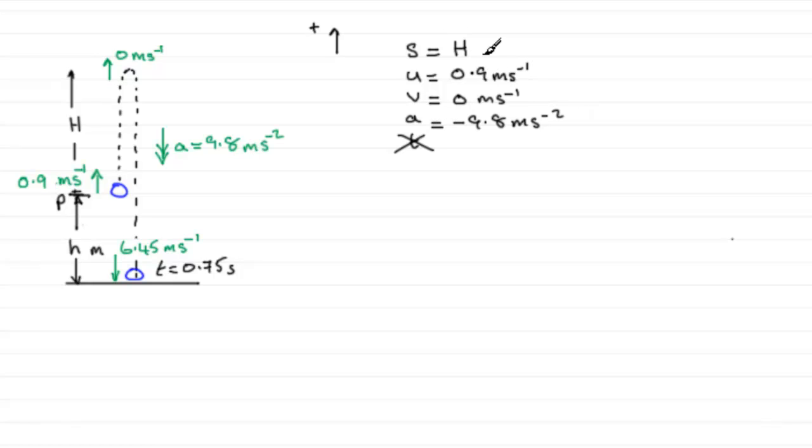So the equation that links these together that doesn't involve T has got to be V squared equals U squared plus 2AS. So that's what we're going to do, using V squared equals U squared plus 2AS.